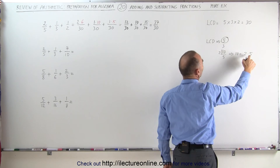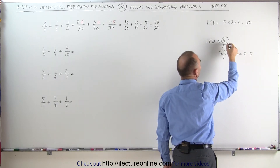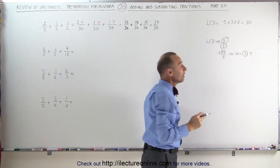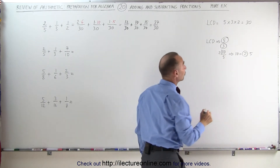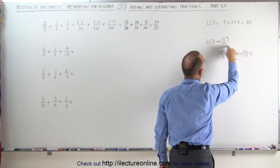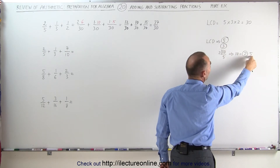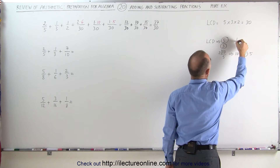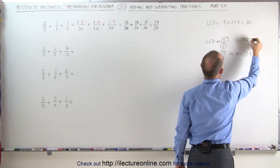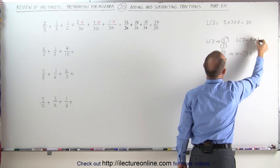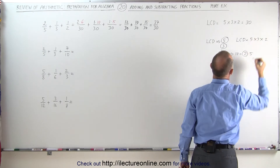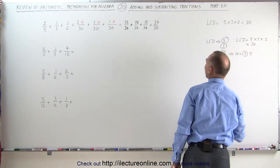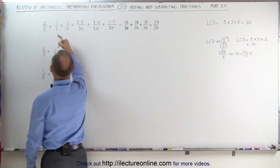Since I already have a 5, I don't need to use this 5 here. I have a 3 here and a 2 there, which means that the lowest common denominator is going to be a product of 5 times 3 times 2. We don't have to repeat this 5, because we already have one 5. The lowest common denominator is 5 times 3 times 2, which is 30 — the same common denominator as before.